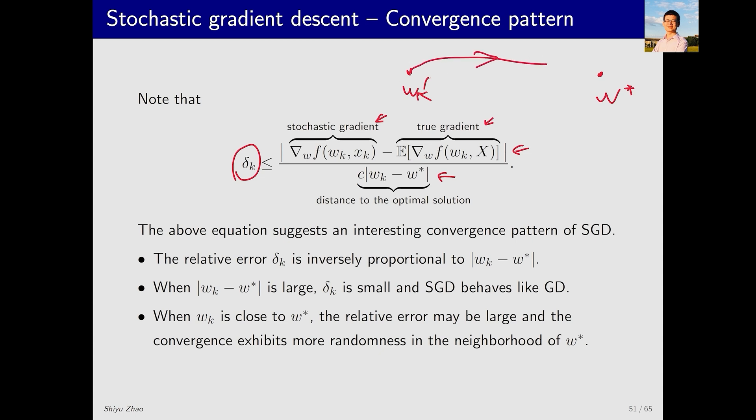Conversely, when w_k - w* is relatively small, the overall upper bound will be quite large. This means that if w_k is close to w*, then the convergence may be somehow random around this point. This suggests an interesting conclusion. When w_k is far from w*, the behavior of SGD is similar to that of ordinary gradient descent. This result can be clearly demonstrated by the following example.